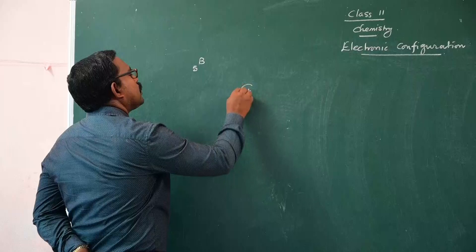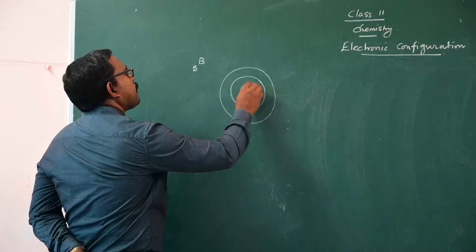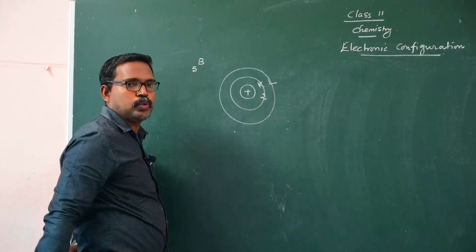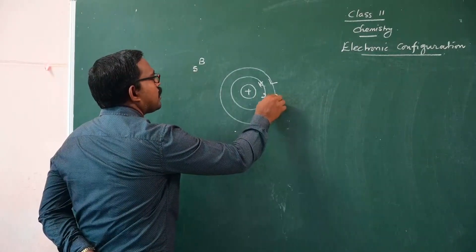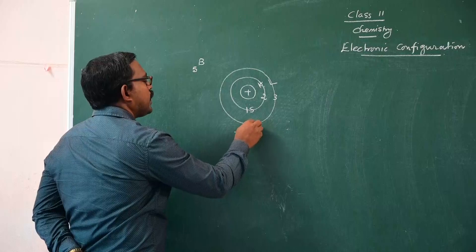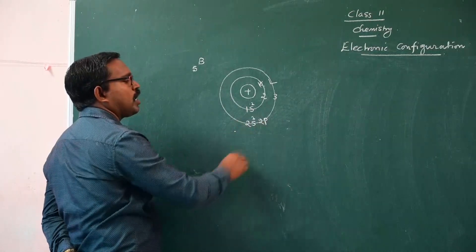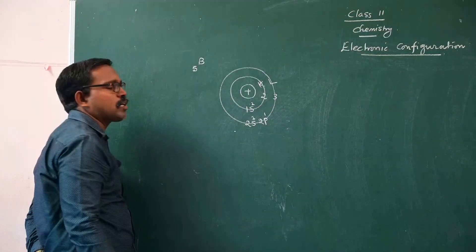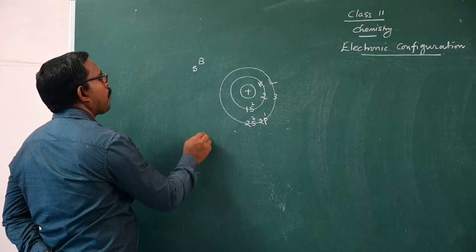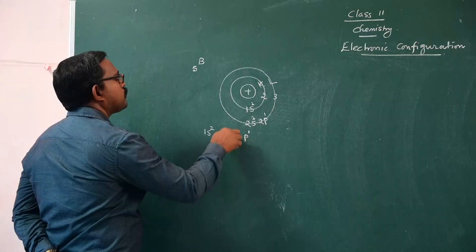We know that the nucleus has energy levels: K energy level and L energy level. K can accommodate two electrons, L can accommodate the remaining three electrons — two and three. So the subshells are 1s, 2s, and 2p. The electronic configuration of boron is 1s², 2s², 2p¹.